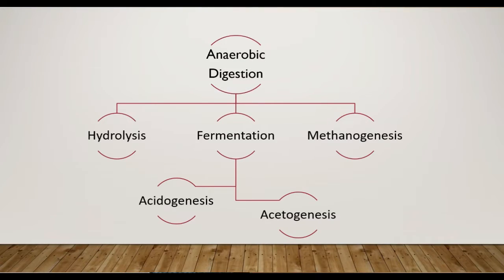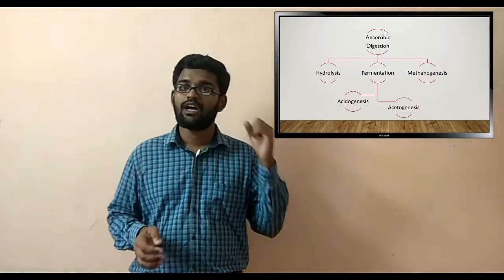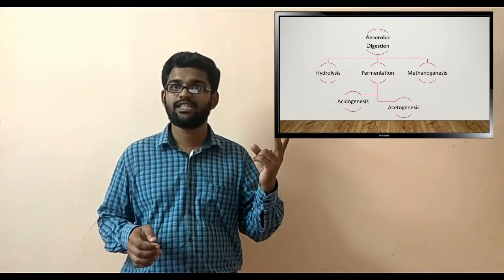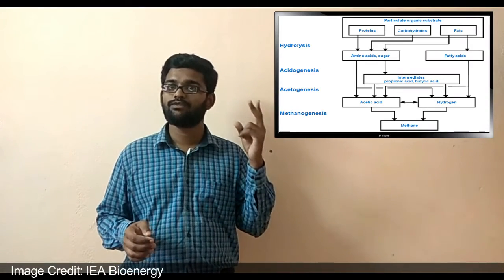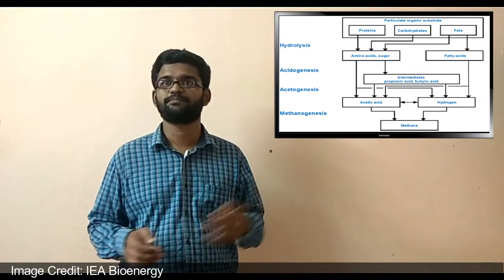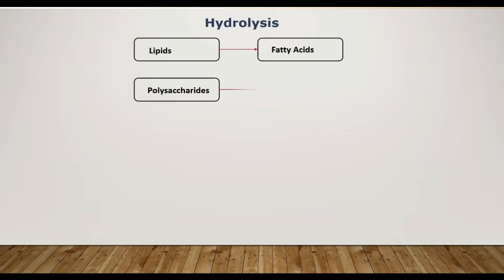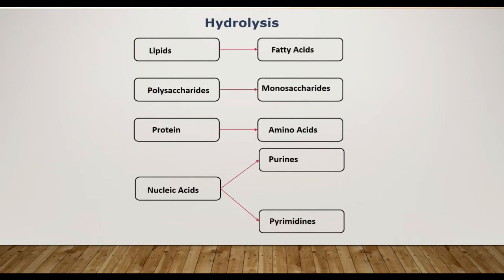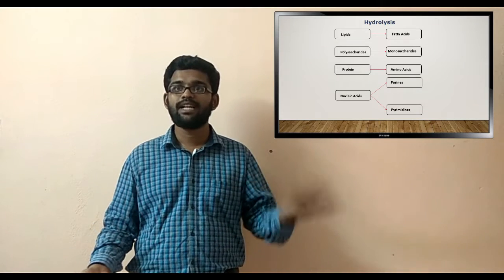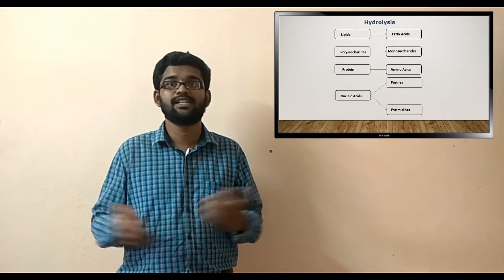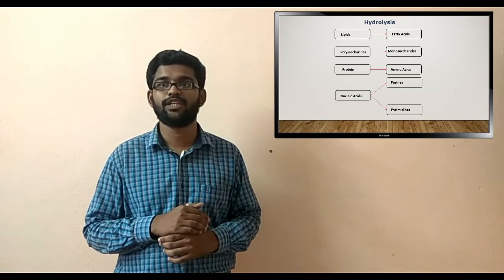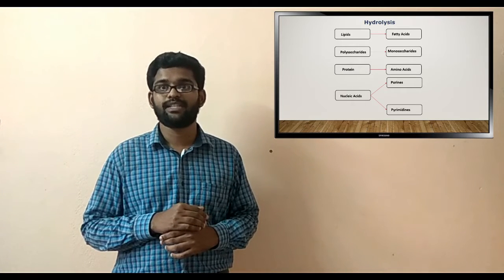Anaerobic digestion involves these following stages namely hydrolysis, fermentation which includes acidogenesis as well as acetogenesis, and the third one is methanogenesis process. In the initial stage of hydrolysis, lipids are converted into fatty acids, polysaccharides are converted into monosaccharides, proteins are converted into amino acids, and finally nucleic acids are converted into purines as well as pyrimidines.